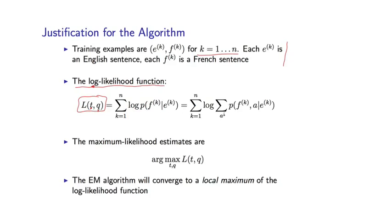And recall that under the IBM models, this probability has the following form where I have a sum over all possible alignments, and I have P of fK comma A given eK. So I have the sum within the log.